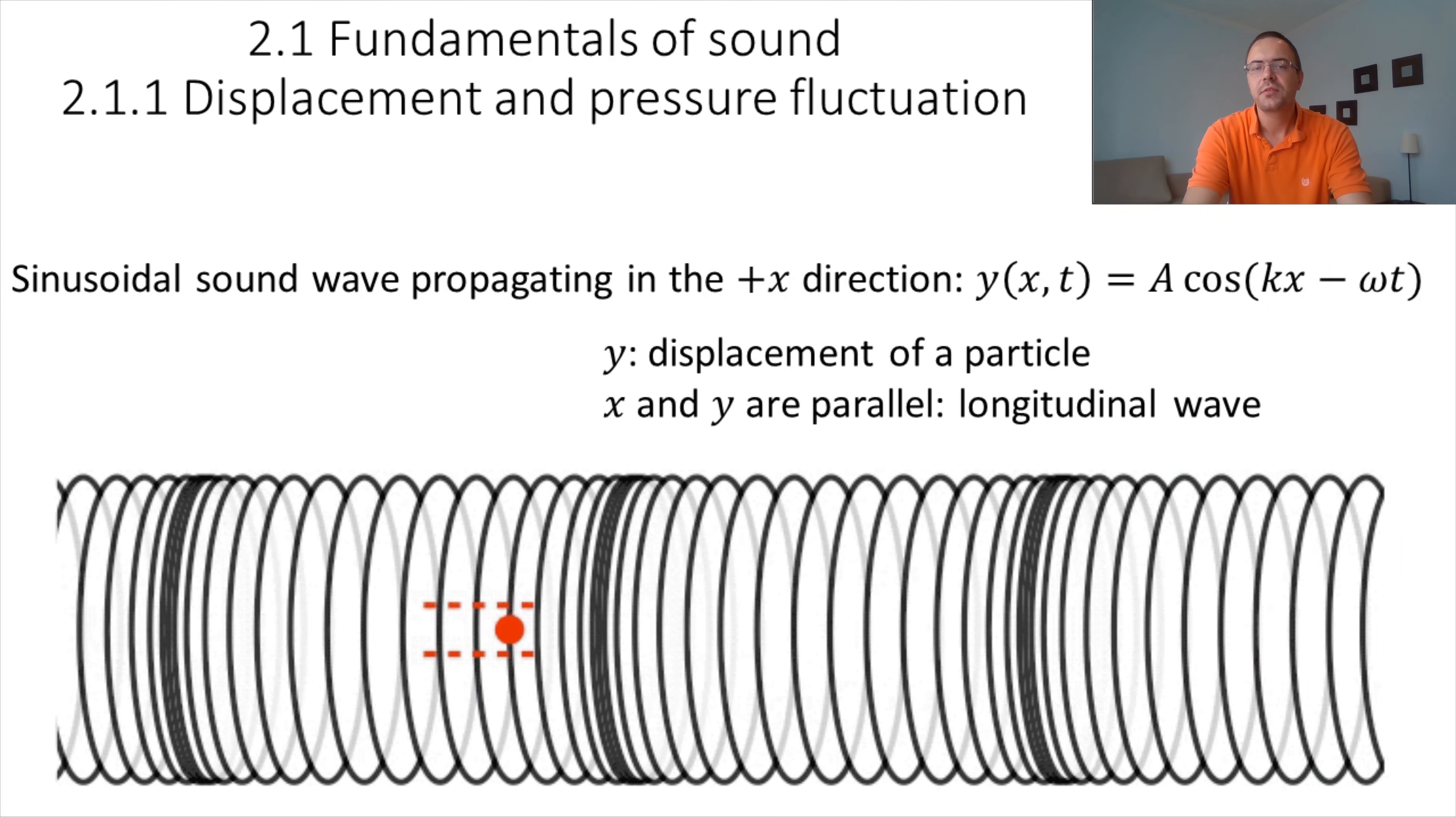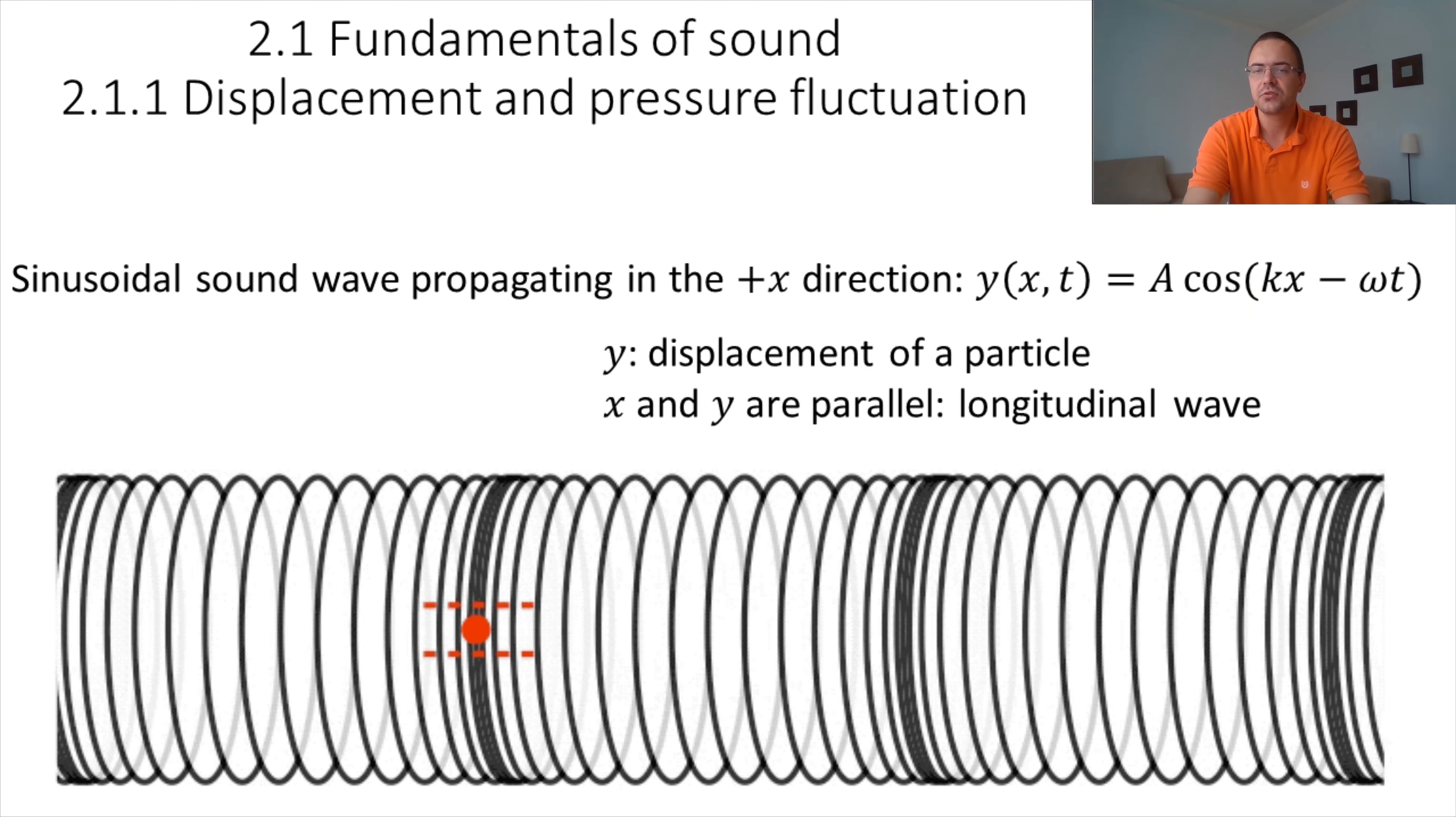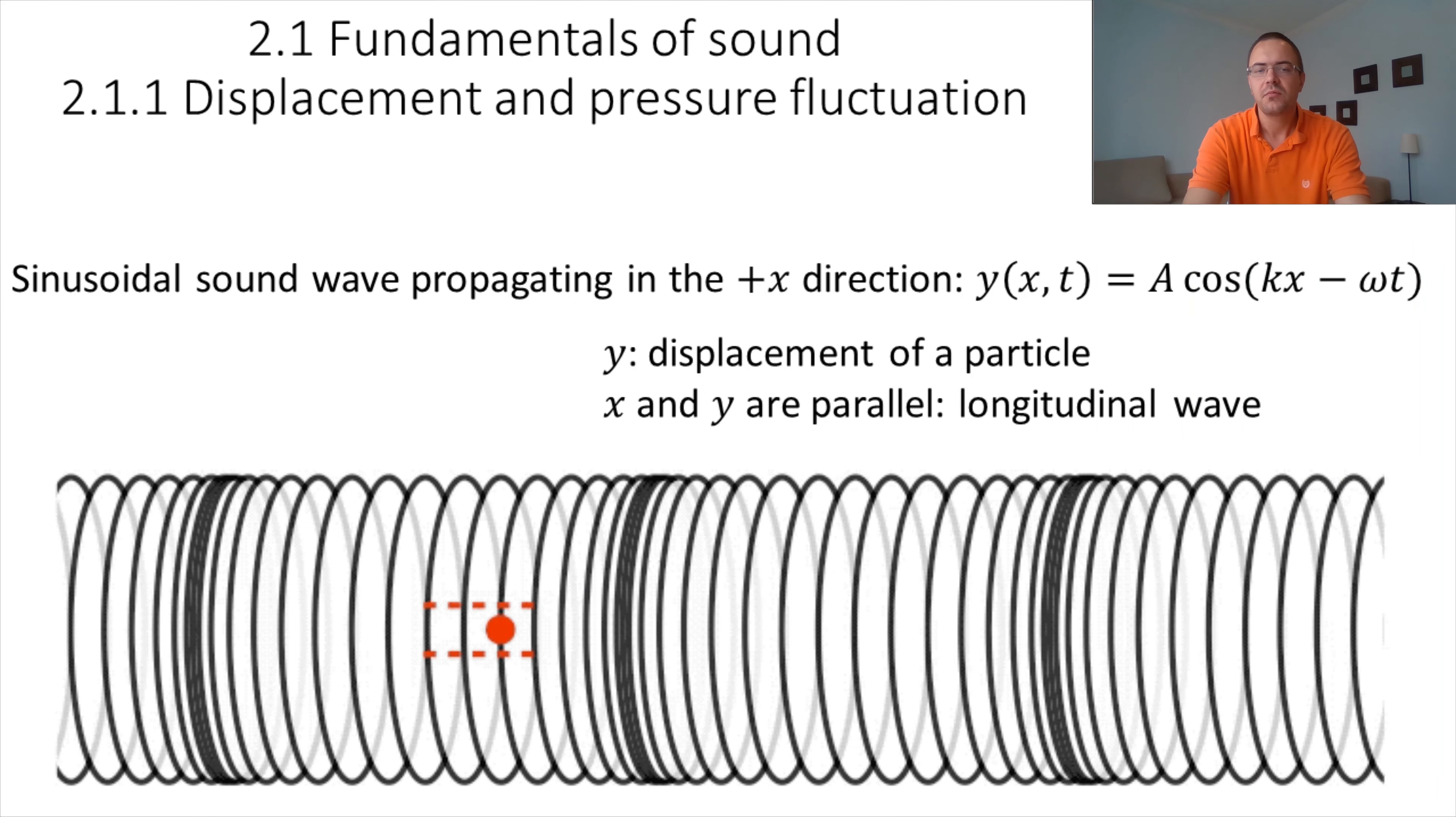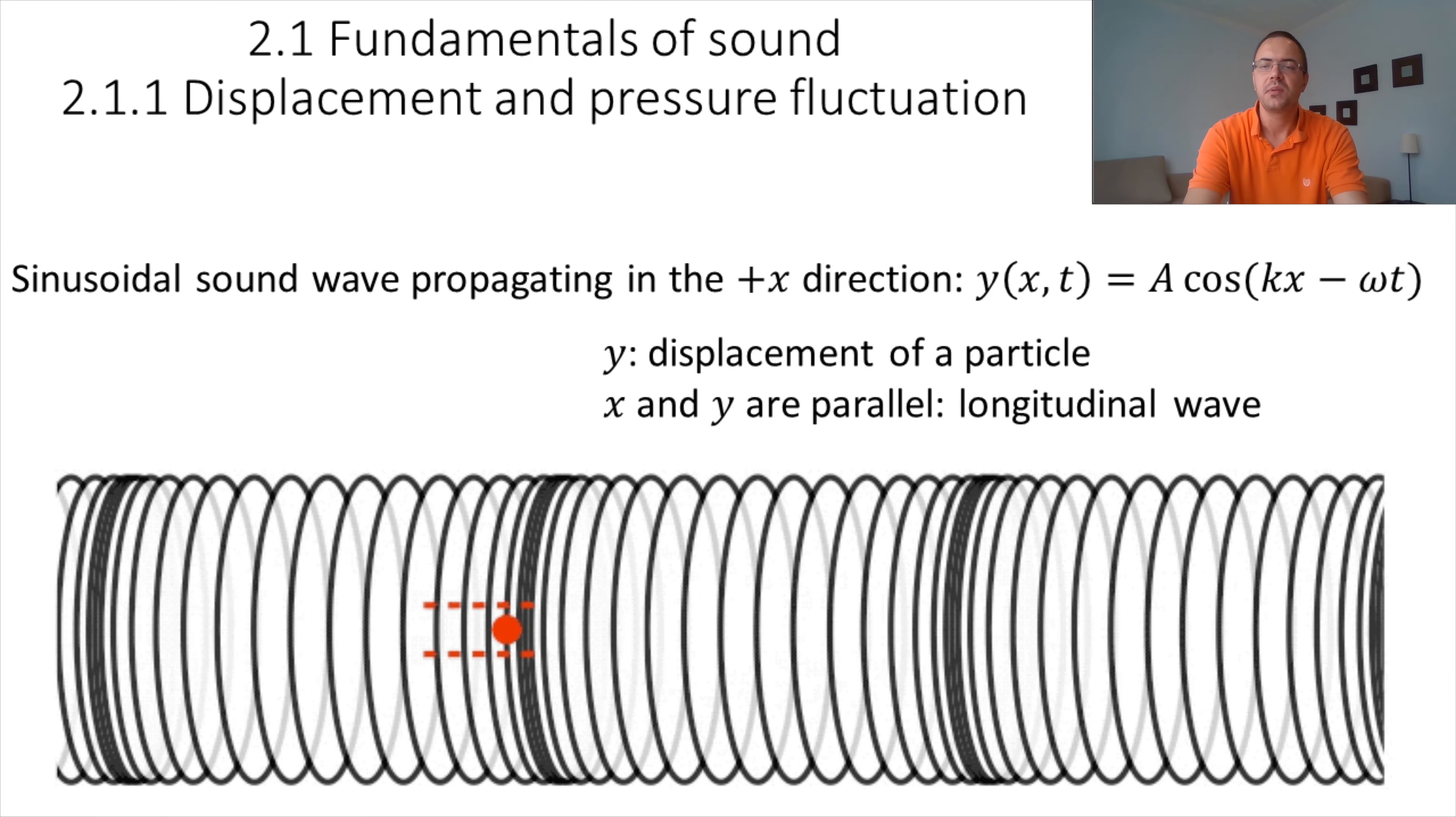In the previous chapter, for a transverse wave on a string, we represented the displacement of a particle with the letter Y. In this chapter, we will continue to use the letter Y for the displacement, but remember that for a longitudinal wave, the displacement is along the same axis as the direction of propagation of the wave. So do not confuse Y with the vertical axis. For example, a positive value of Y can represent the particle being displaced to the right, and a negative value of Y can represent the particle being displaced to the left.